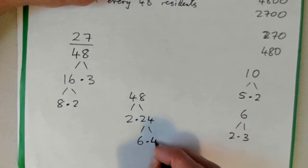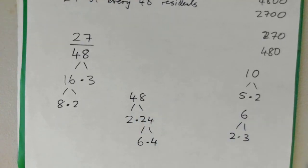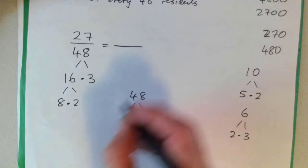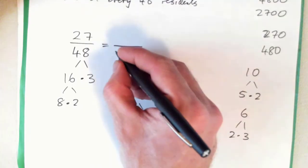Another way is, another student might say okay, 48 is 2 times 24, and 24 is 6 times 4. And that's fine as well. So there's lots of ways of splitting it up.